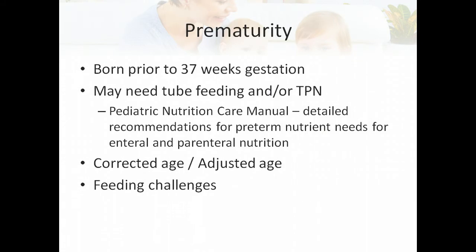We'll start with prematurity. Prematurity is any baby born prior to 37 weeks gestation. 40 weeks is considered full gestation, so anything before 37 weeks is considered premature. Depending on how premature the baby is, they may need tube feeding and/or TPN, as very small babies' digestive systems just are not ready for nutrition sometimes and have to start on TPN.